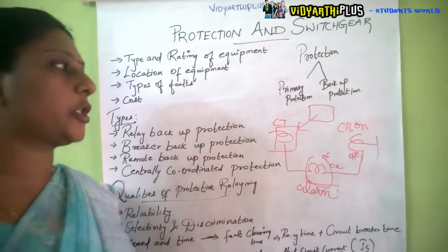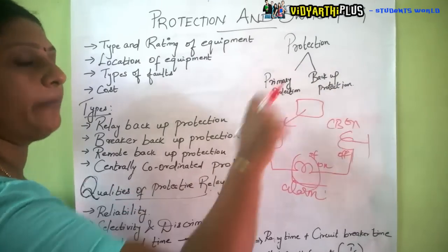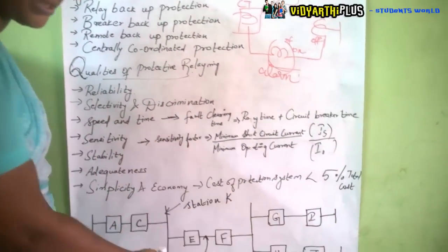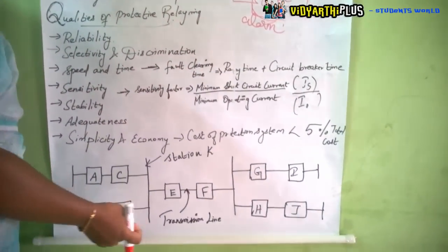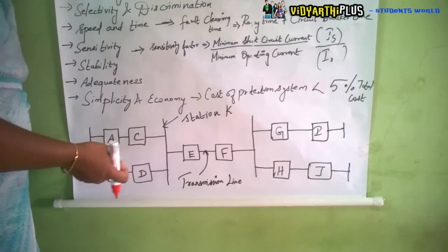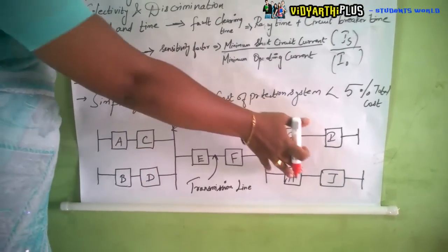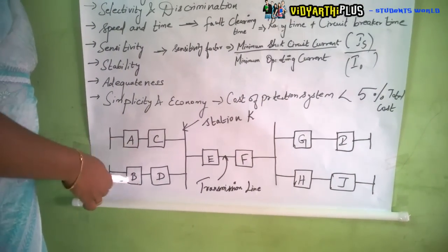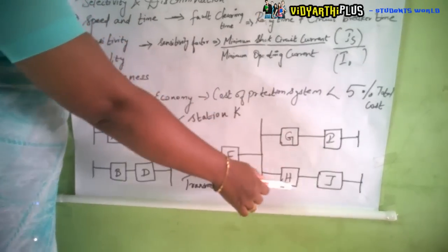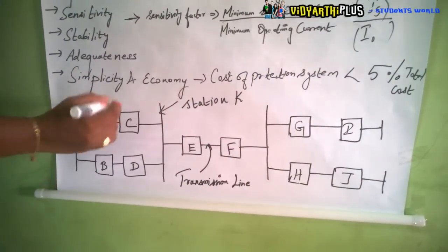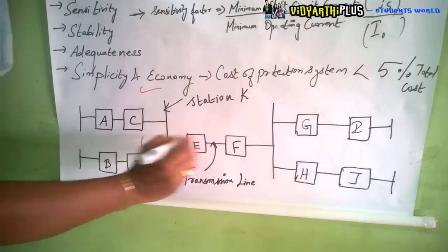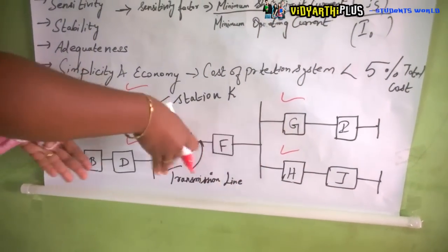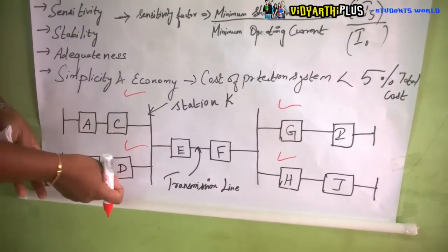There are two types of protection: one is the primary protection, and the next is the backup protection. Let us assume this is the transmission line. You can see here there are four relays connected on your left hand side and four relays connected on your right hand side, labeled A, B, C, D and G, H, I, J.